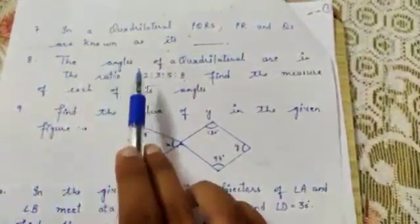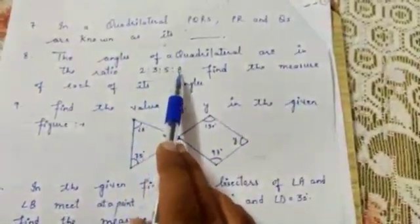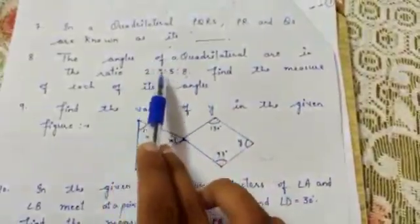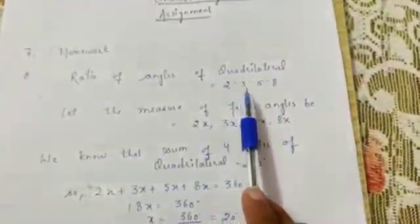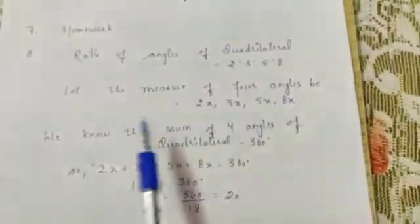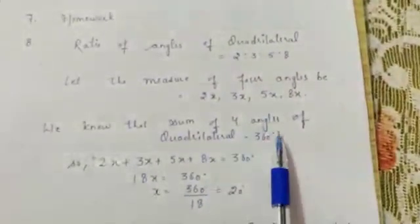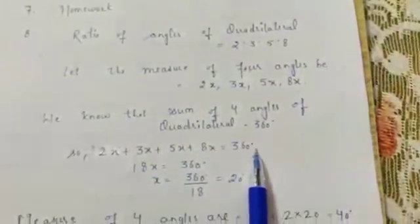Sum number 8. The angles of a quadrilateral are in the ratio 2:3:5:8. Find the measure of each of its angles. Here we are having the ratio of the 4 angles and we have to find their actual measure. So let the measure of the 4 angles be 2x, 3x, 5x, and 8x. We know that the sum of all 4 angles of a quadrilateral is 360 degrees by the angle sum property of quadrilateral. So 2x + 3x + 5x + 8x = 360 degrees.